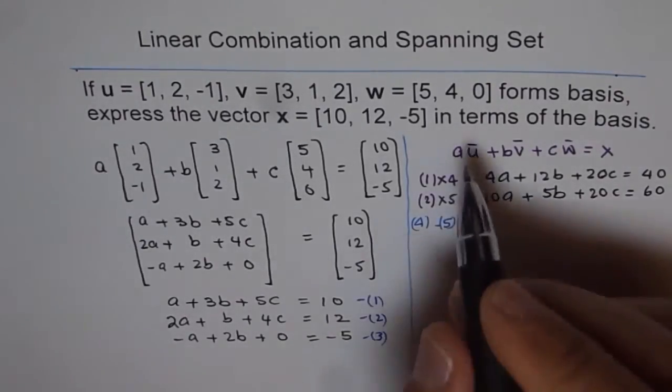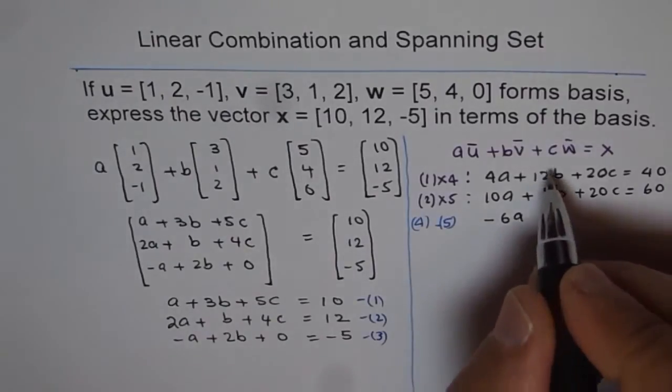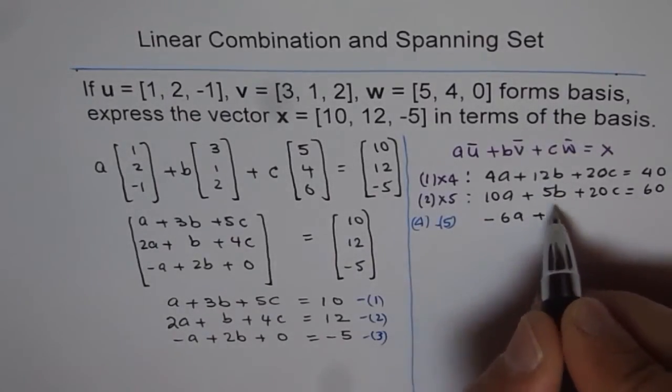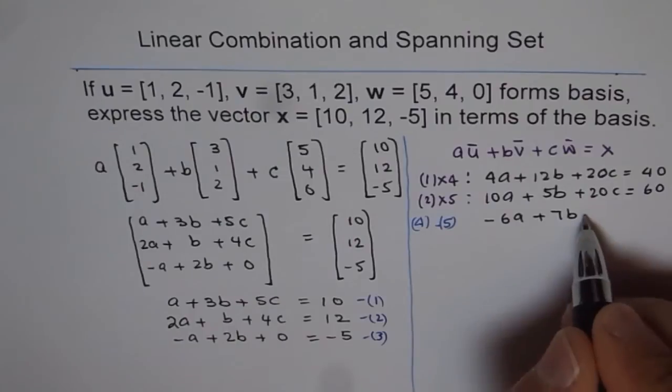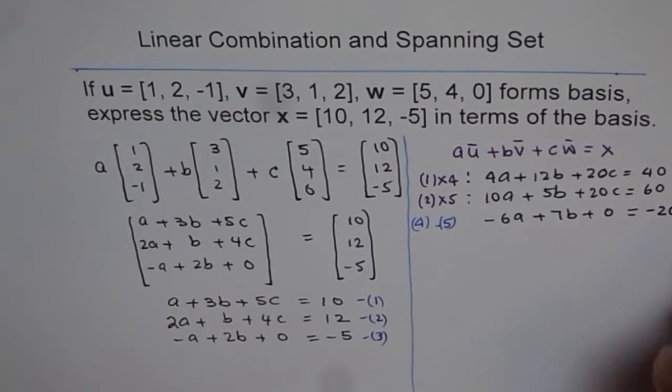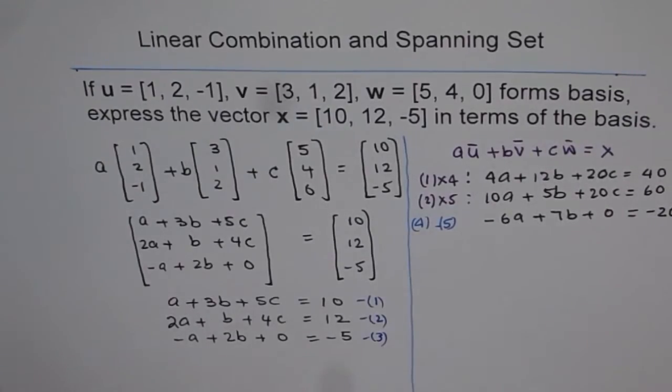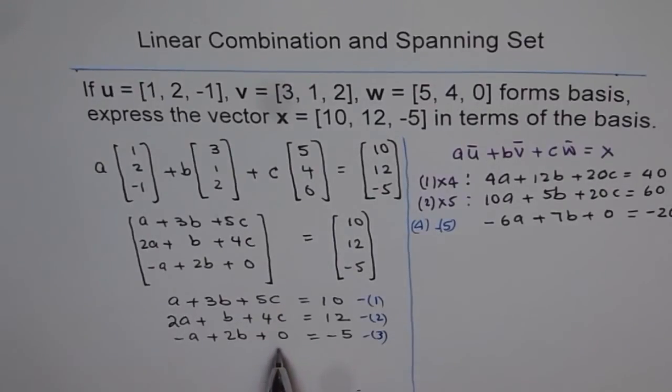So here we are subtracting the equations, and thereby we will get minus 6A, and here we get plus 7B. And this is 0, we can write plus 0 equals 2, minus 20. And so we get another equation here, and let me write this as 6.